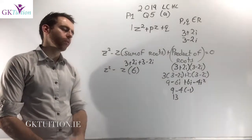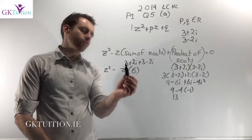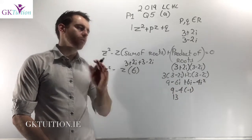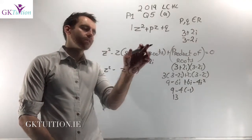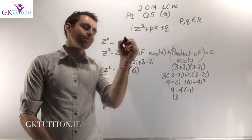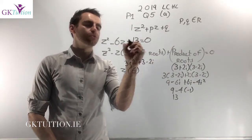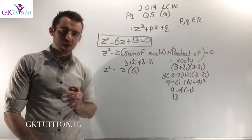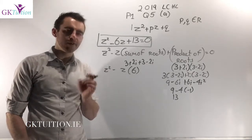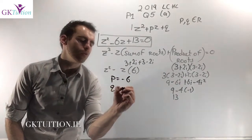The sum of the roots is (3 + 2i) + (3 − 2i). The two i terms cancel, giving 6. The product of the roots works out as 13. So the quadratic is z² − 6z + 13. Always make sure you answer exactly what was asked: p = −6 and q = 13.